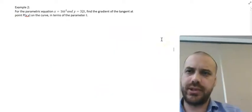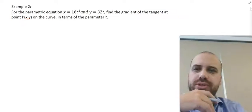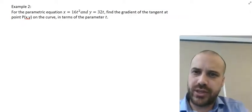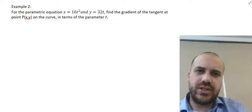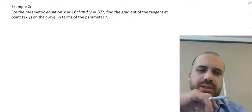Alright, so we'll do this example here as well. For the parametric equation, we've got it here. Find the gradient of the tangent at point p, x, y, on the curve in terms of the parameter t.